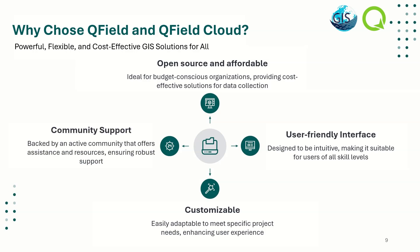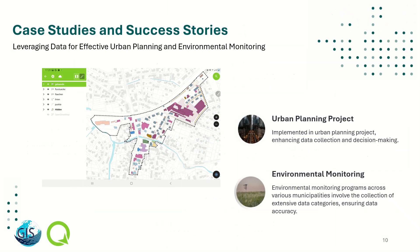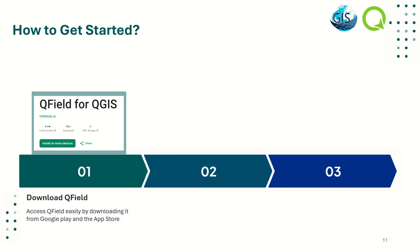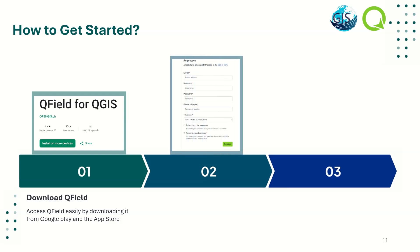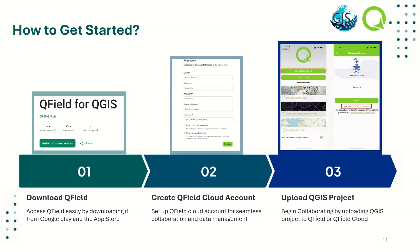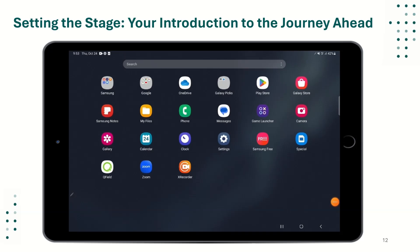QField and QField Cloud provide a cost-effective GIS solution that is both powerful and adaptable to any industry's needs. They offer a balance of affordability, flexibility, and capability, making them a valuable choice for anyone needing reliable GIS tools. Real-world case studies highlight QField's success, with urban planning and environmental monitoring initiatives benefiting from enhanced data collection and improved accuracy. Getting started is easy — install it on your device, integrate your QGIS project, set up cloud storage if needed, and start enjoying the benefits of efficient mobile GIS.